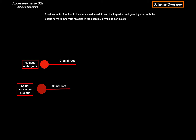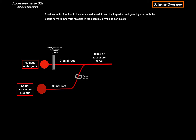The cranial root is going to exit the brainstem through the retro-olivary groove, while the spinal root is going to go up, enter the cranium through the foramen magnum, and fuse with the cranial root of the accessory nerve, which then will form the trunk of the accessory nerve. The trunk of this nerve then goes through the jugular foramen and splits into an internal branch and an external branch.